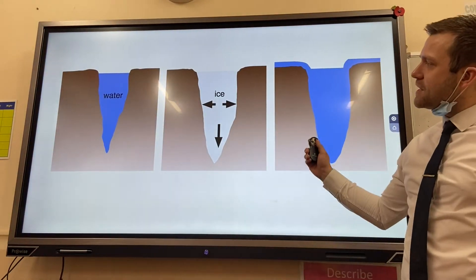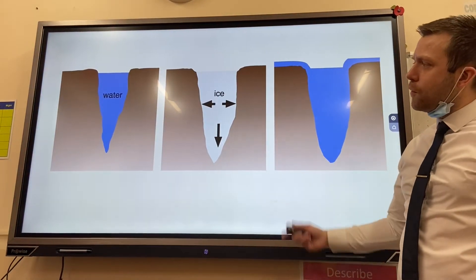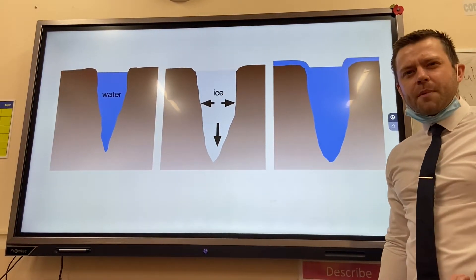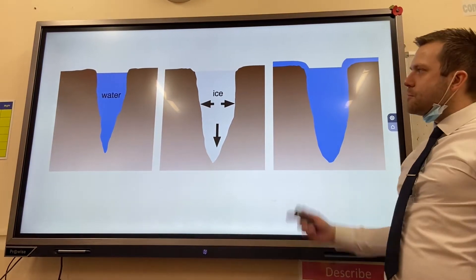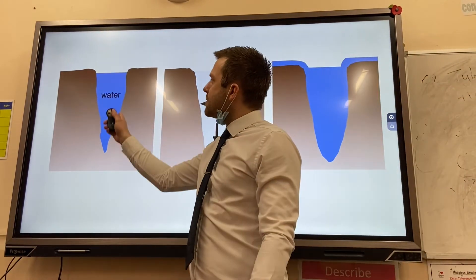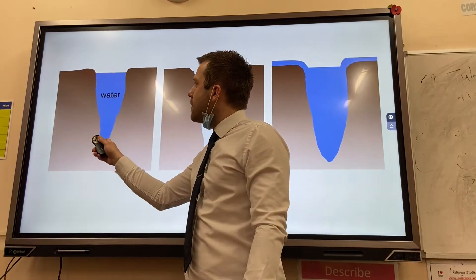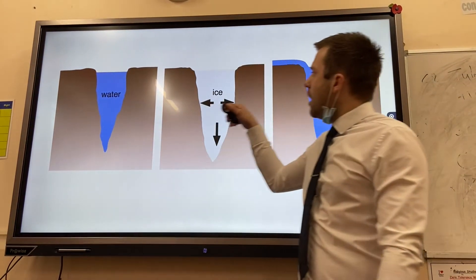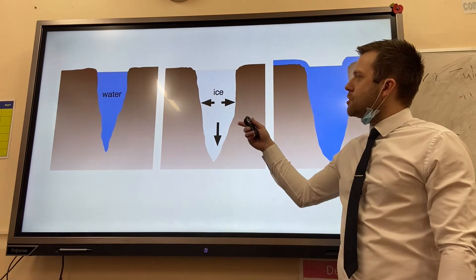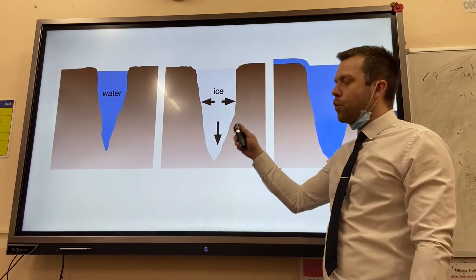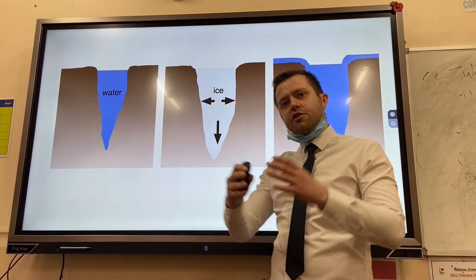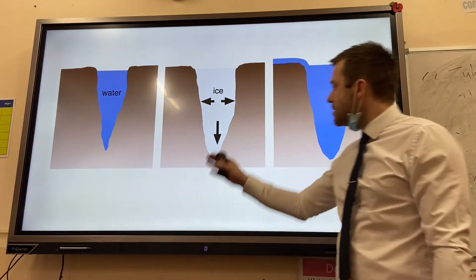This first example is freeze-thaw, a type of mechanical weathering, sometimes called frost shattering. Water precipitation ends up in cracks in the cliff face. At night time, due to colder temperatures, the water freezes, turns to ice, and expands.